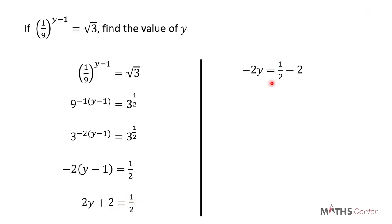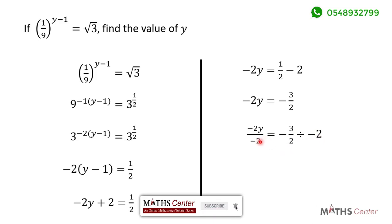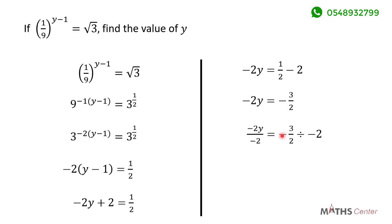Grouping like terms, we have negative 2y is equal to 1 divided by 2 minus 2, which gives us negative 3 divided by 2. So negative 2y equals negative 3 divided by 2. Dividing both sides by negative 2, the negatives cancel and negative 3 divided by 2 divided by negative 2 gives us 3 divided by 4. So the value of y in this equation is 3 divided by 4.